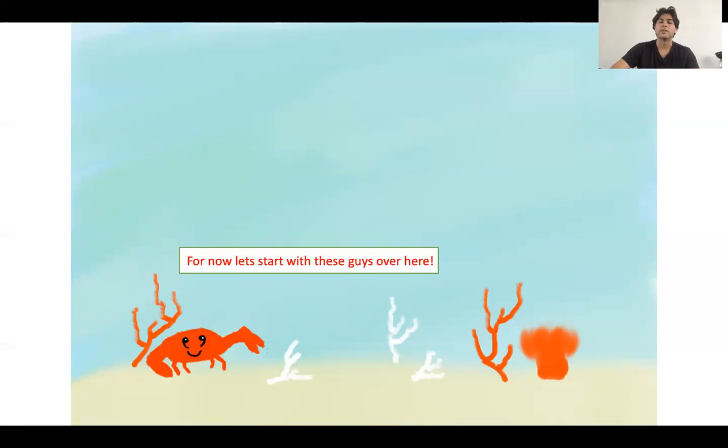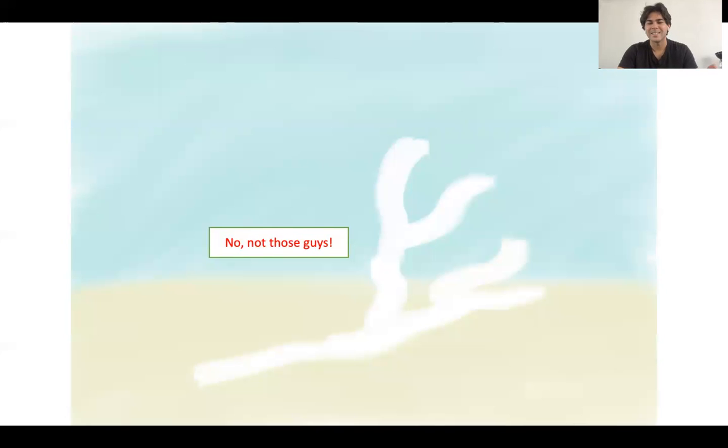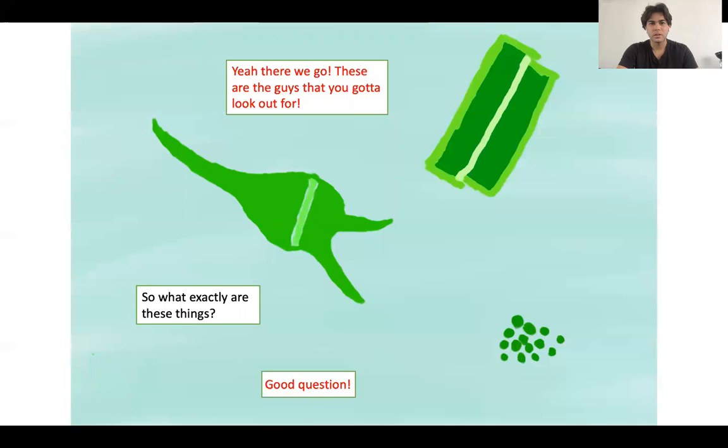And he's going to float more down. For now, let's start with these guys over here. If you notice, I actually put little dots near his claws, because the things that we really need to be more cautious of cannot be seen with our human eyes. A little joke I put in there. No, not these guys. That's because this is actually a different issue, bleached coral and all. Yep, there we go. These are the guys that you got to look out for.